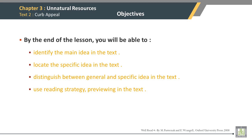Chapter 3: Unnatural Resources, Text 2: Curb Appeal. Objectives — by the end of the lesson, you will be able to identify the main idea in the text, locate the specific idea in the text, distinguish between general and specific ideas in the text, and use the reading strategy of previewing in the text.